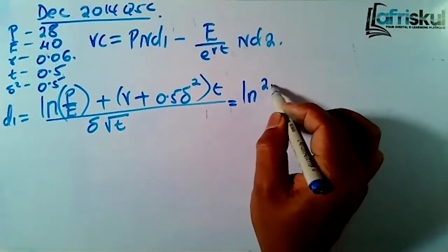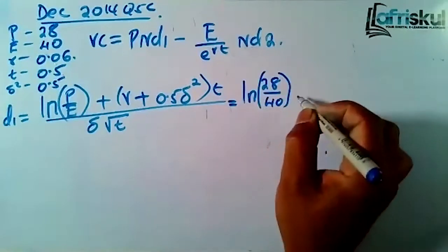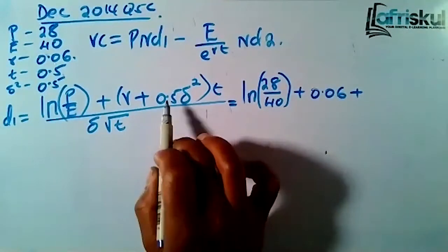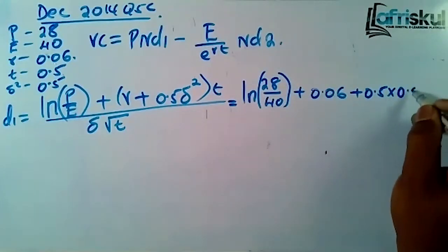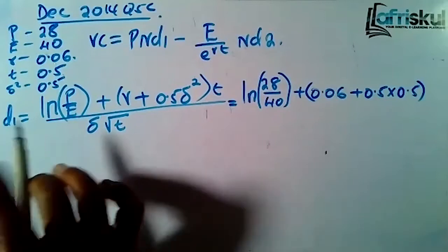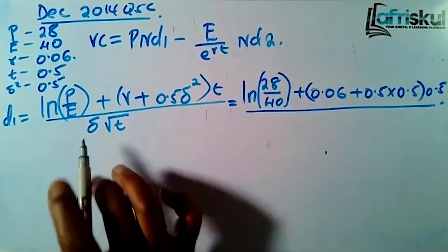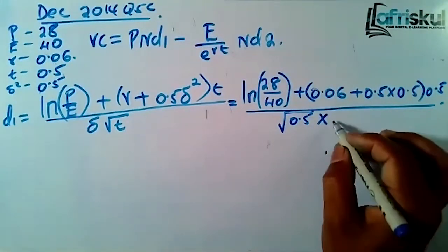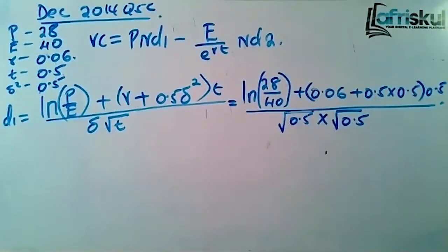So now let's compute d1. You take the natural log of the market price 28 divided by the exercise price 40, then add the risk-free rate 0.06 plus 0.5 times the variance which is also 0.5, multiplied by the time to maturity 0.5. All divided by the standard deviation — since the variance is 0.5, you take the square root — then multiply by the square root of time, which is also 0.5.